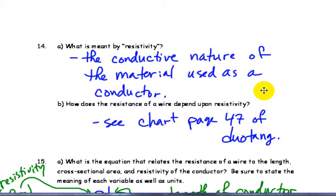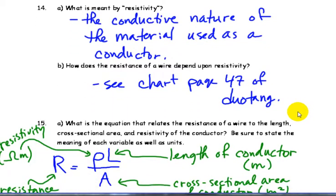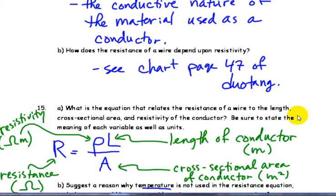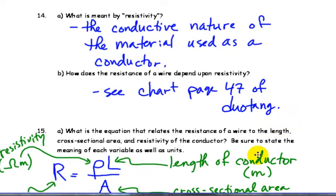Resistivity talks about the type of substance it is, whether it's copper wire or aluminum wire, the conductive nature of the material used itself. And in the electricity duotang, page 47, discusses some values of resistivity for different substances.